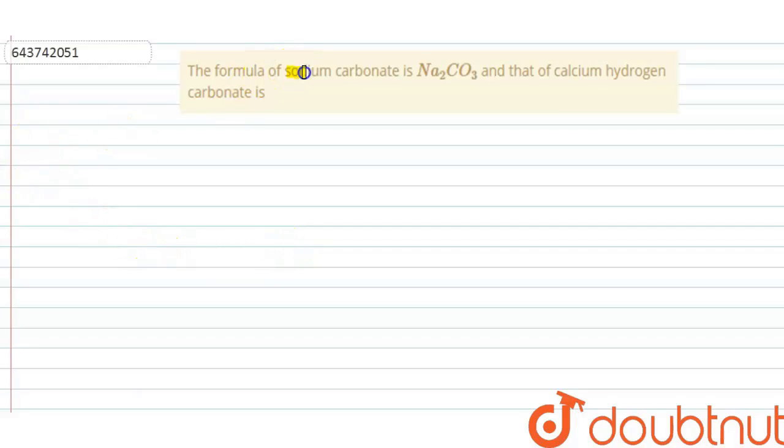The question says the formula of sodium carbonate is Na2CO3 and that of calcium hydrogen carbonate is blank.